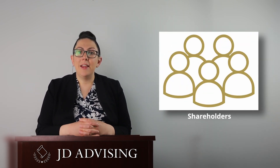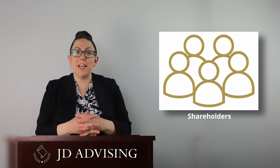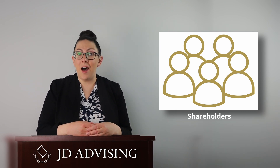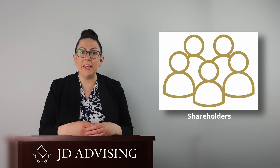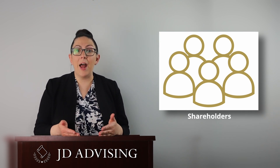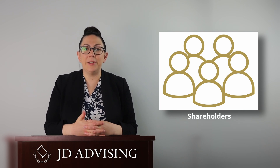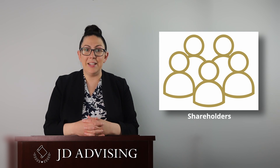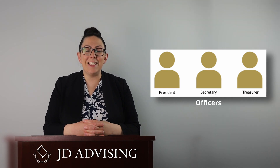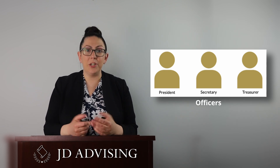Next we have shareholders, who are the owners of the corporation—think of them as investors. One of the main decisions that shareholders get to make is that they get to select the directors. Shareholders don't meet as often as directors; they're entitled to one meeting a year where they get an update on how the corporation is doing and vote on who the directors are. Shareholders are allowed to vote by proxy or by voting agreement, so they don't have to appear in person. The third role is an officer, who manages the day-to-day transactions for the corporation—people like the president, the secretary, and the treasurer.